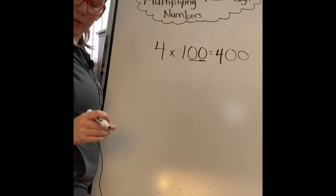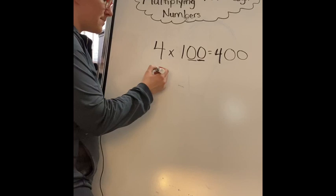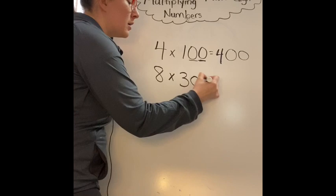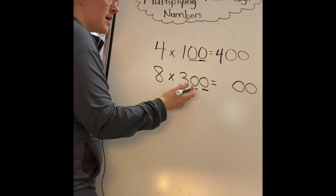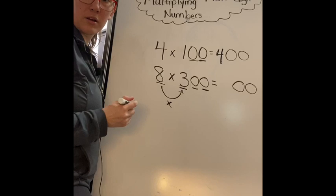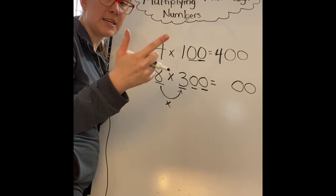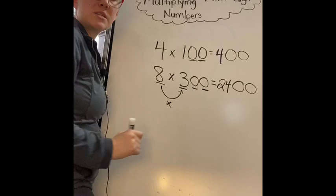You can do that no matter what your hundreds or tens is. Maybe you got 8 times 300 equals. I see two zeros so I'm going to write down two zeros. Then I look at this number and this number and multiply them together. 8 times 3, I know my skip counting, 8, 16, 24, so my answer must be 2400.